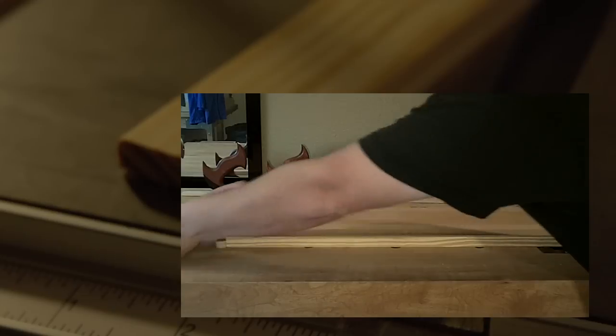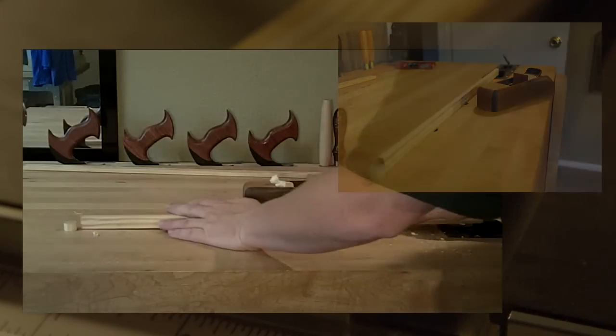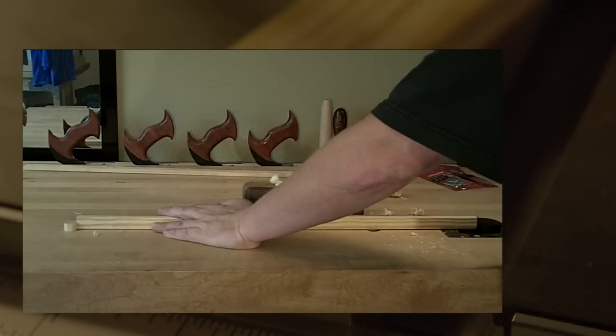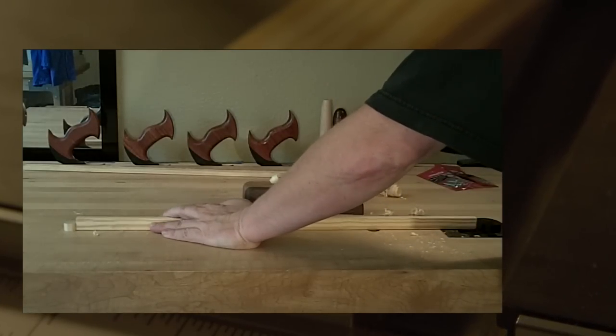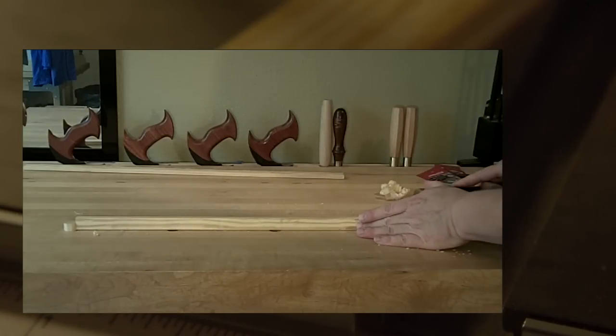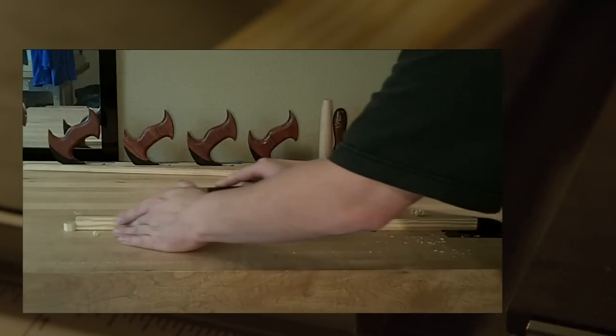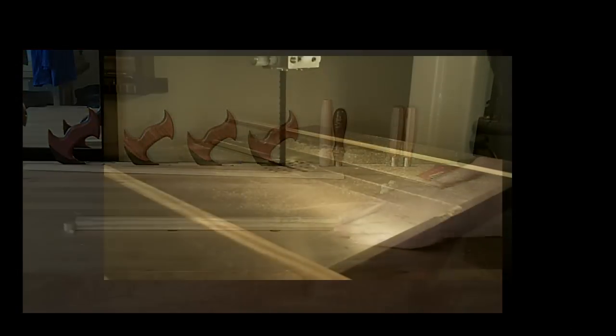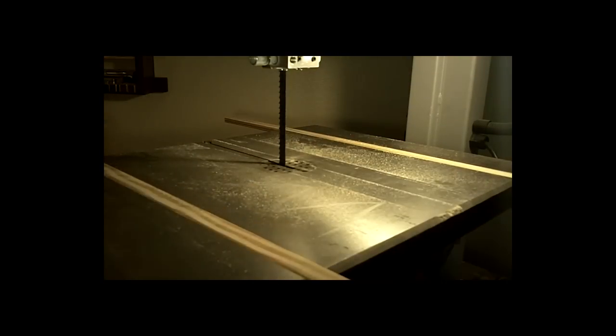I flattened one side of these sliders and set the bandsaw so I could rip them slightly oversized. After I cut them, they would not fit in the channels. I spent quite a bit of time going back and forth between the bandsaw and the workbench. Every time I went to the workbench, I would take one or two swipes with my plane, then go back to the bandsaw and check it out. It's extremely important you don't overshoot it and make it a tad bit too thin, because if there's any slop you need to start over. When they slide freely back and forth, you know you've done a good job.